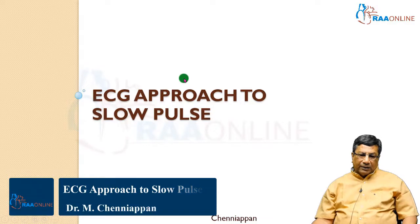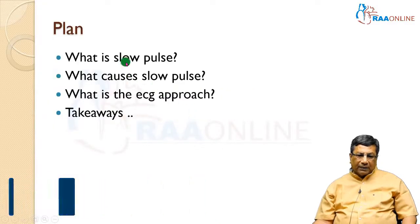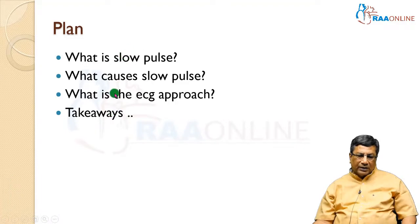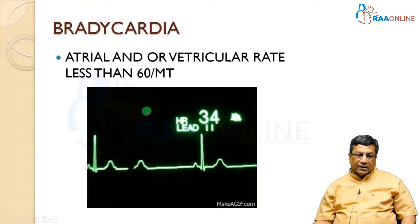Now we have an ECG approach to slow pulse or bradyarrhythmia. This is the plan through which we are going to see this lecture. First of all, we define what is slow pulse. Any heart rate less than 60 per minute is a bradycardia.